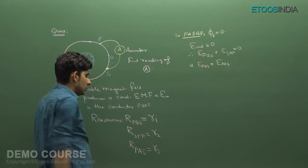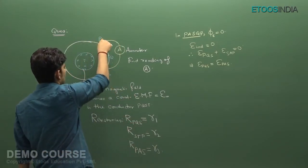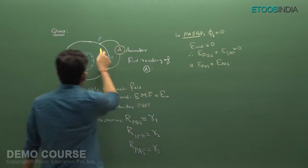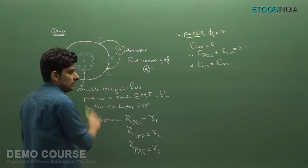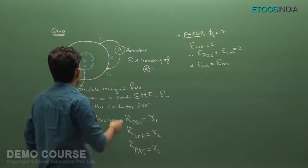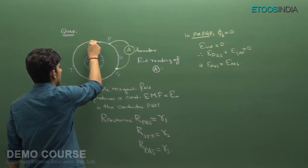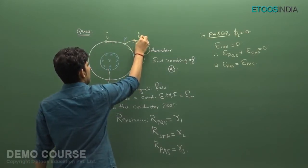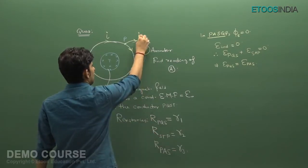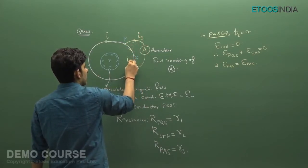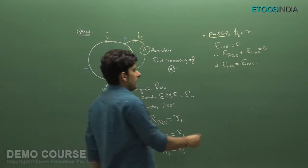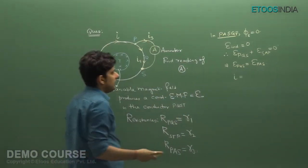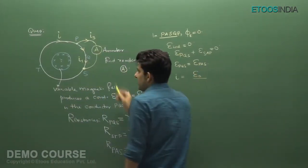Their resistances are given as R1, R2, and R3. Now, talking about the current — how can we find the current? The EMF in this whole loop is given as E₀. The current I can be written as the total EMF E₀ divided by the total resistance of the loop.